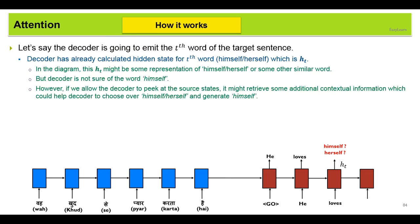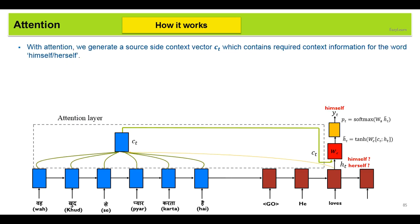However, if we allow the decoder to peek at the source states, it might retrieve some contextual information. Like it might focus on veh, khod and karta and retrieve that the word himself would be proper. So with the attention mechanism, we generate a source side context vector ct, which contains the required contextual information for the word himself or herself.